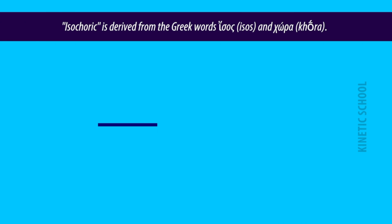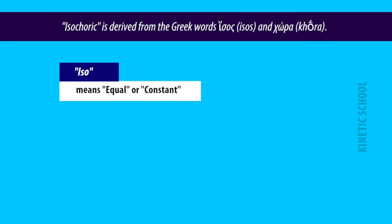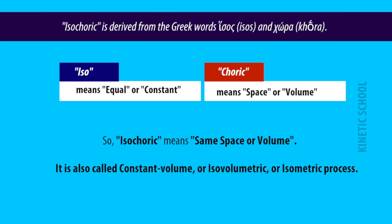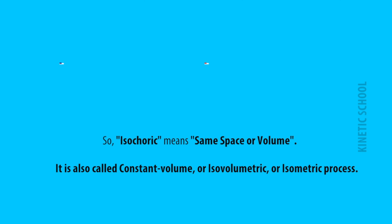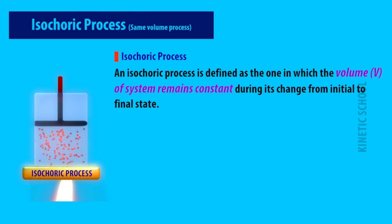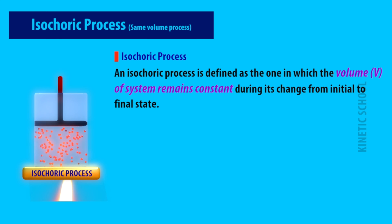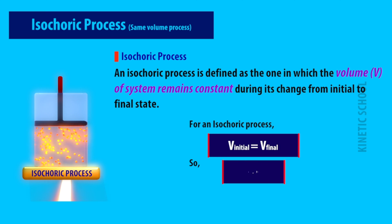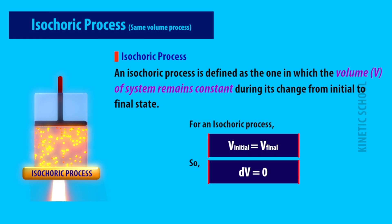The next type is the isochoric process. Isochoric is derived from the Greek words 'isos' and 'khora.' 'Iso' means equal or constant, and 'khoric' means space or volume, so isochoric means same space or volume. It is also called constant volume, iso-volumetric, or isometric process. An isochoric process is defined as one in which the volume of the system remains constant during its change from initial to final state. For an isochoric process, initial volume equals final volume, so dV is equal to zero.